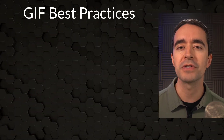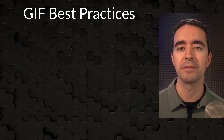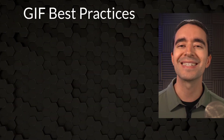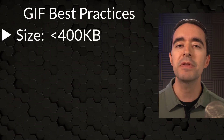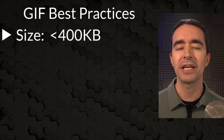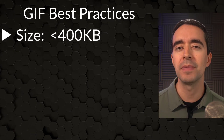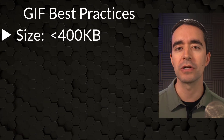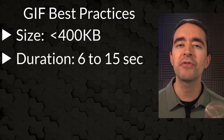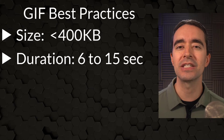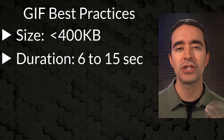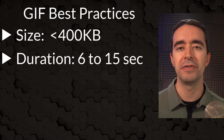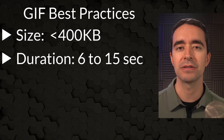There are a few things you need to know about GIFs before you create them. Number one is the size — keep them small, like 400 kilobytes or smaller. Number two, duration — aim for six seconds or less, and don't go above 15 seconds.